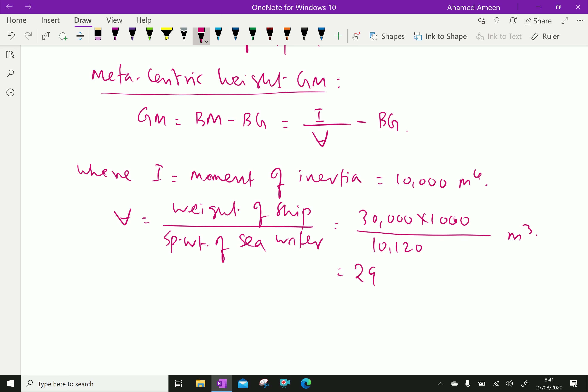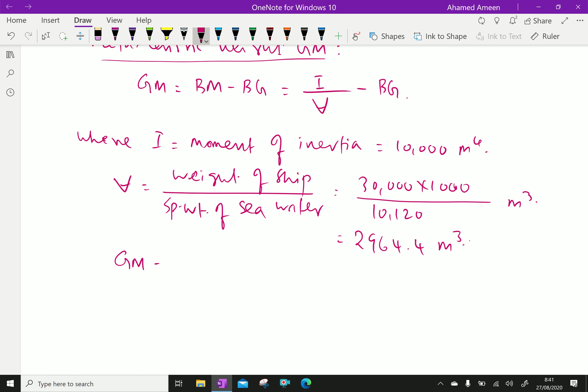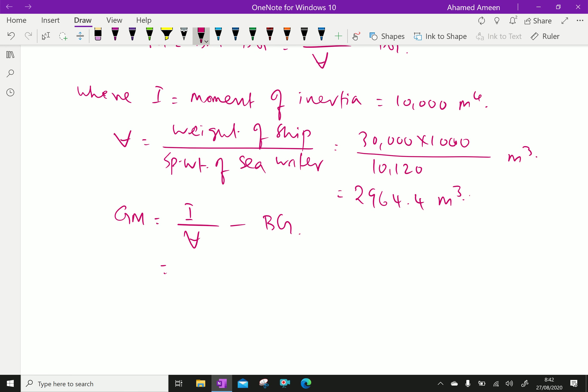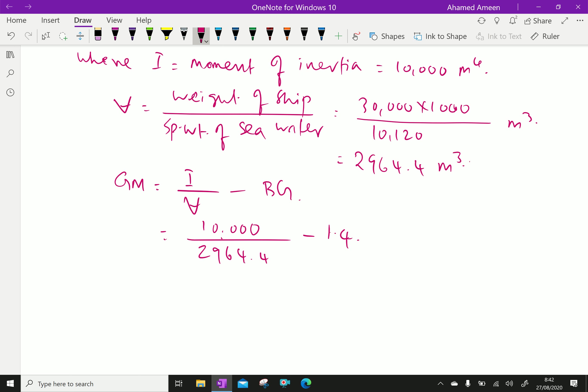V equals 2964.4 meter cube. Now, we will calculate gm equals I over V minus BG. Here I is 10,000, V is 2964.4, minus BG is 1.4. This gives 3.373 minus 1.4 which equals 1.973 meter.